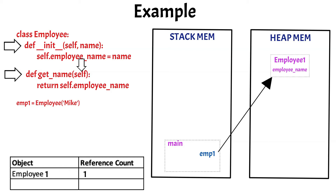Now we can write: emp2 = emp1. Then the emp2 variable will be created in the stack memory, and it will also be mapped to the employee object 1. This will increase the number of reference counts for employee object 1 to 2 in the table.